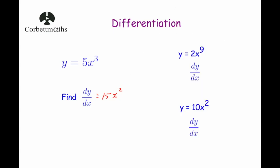If we were given y equals 2x to the power of 9, you bring the power down and do 2 times 9, which is 18, then x and reduce the power by 1 — so it's 8, giving 18x to the power of 8. And if we were given y equals 10x squared, 10 times 2 is 20, then x with the power reduced by 1 — that's 1 — but we just write 20x.